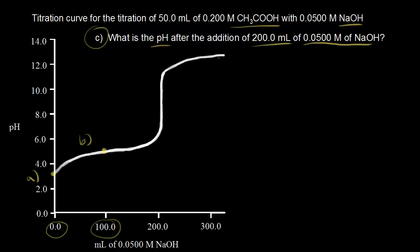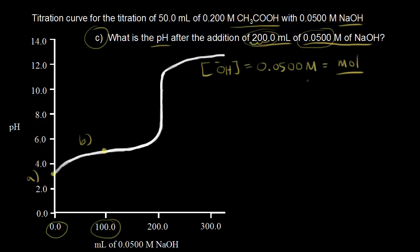So how many moles of hydroxide ions are we adding? The concentration of sodium hydroxide is 0.05 molar, which is the same concentration for hydroxide. Molarity is moles over liters, and 200 milliliters is 0.2 liters. So 0.05 times 0.2 gives us 0.01 moles of hydroxide ions.